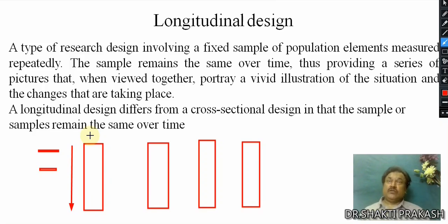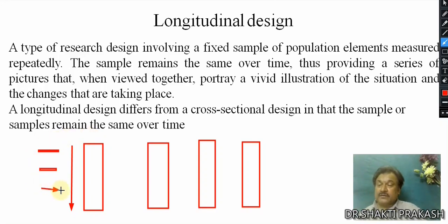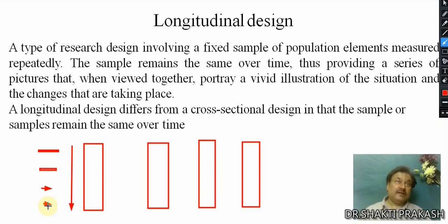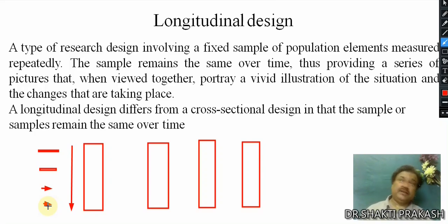In cross-sectional design it is horizontal — for a specific point in time — while longitudinal design tracks the same respondents over different years, such as 2000, 2005, 2010, 2015, and 2020. You can compare the economic conditions of a country, inflation rates, or GDP over those periods. This makes longitudinal design useful for competitive research studies.